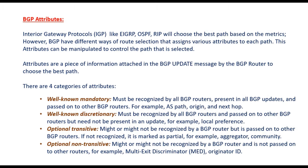Well-known mandatory is an attribute which must be recognized by all BGP routers. It is present in all BGP updates and passed to other BGP routers. Examples are AS Path, origin, and next hop. Well-known discretionary is recognized by all BGP routers and passed to other routers, but it is not available in all update messages. Optional transitive might or might not be recognized by the BGP router but is passed to other routers. Optional non-transitive also might or might not be recognized and is not passed to other routers.